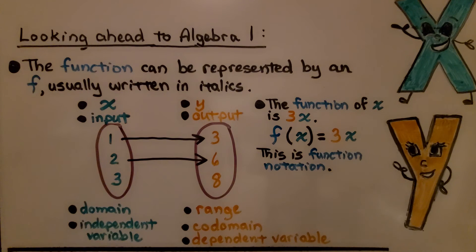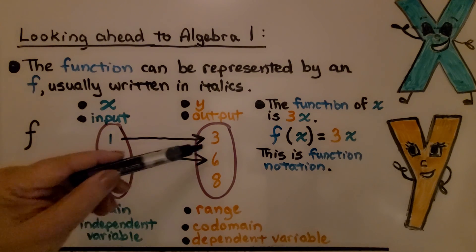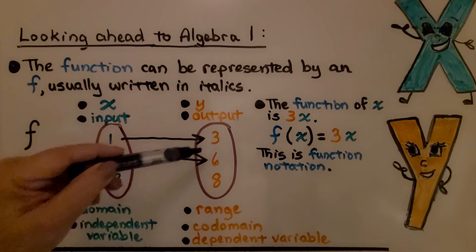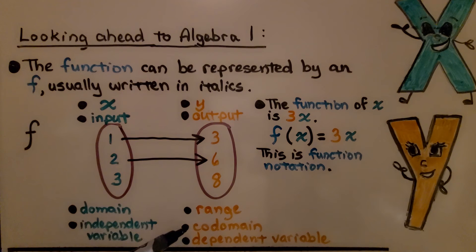The function can be represented by an f, usually written in italics. You might see it written like this, real fancy. We have our input, that's our x value. It's also called the domain, and it's the independent variable. The output, that's our y value, that's called the range, or the codomain, and it's the dependent variable.